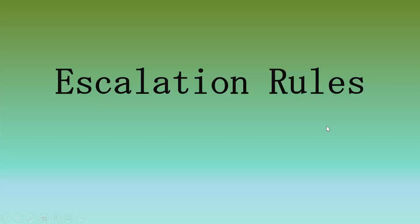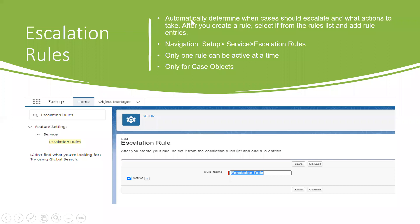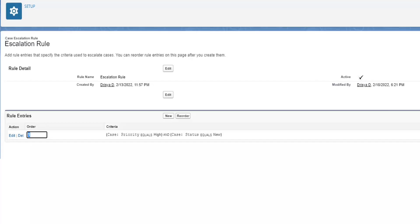The escalation rule automatically determines when cases should escalate and what action to take. After you create a rule, select it from the rule list and add rule entries. Navigation is setup → service → escalation rule, only one rule can be active at a time, and it only applies to the case object.